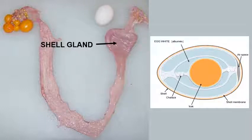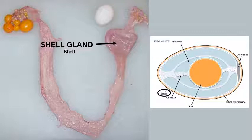The last major part is the shell gland, also called the uterus. The shell is added in the shell gland. This is where most of the time is spent in the assembly of an egg — it can take about 20 hours for the shell to be completed. If the shell is going to have a color, like you see with brown-shelled eggs, the pigment is added here. However, there is no difference in the making of a brown-shelled or white-shelled egg except for the addition of the pigment in the shell gland.